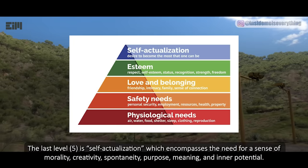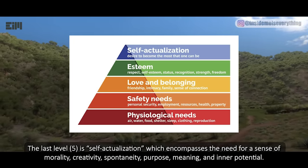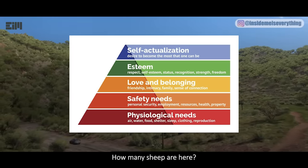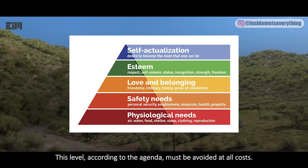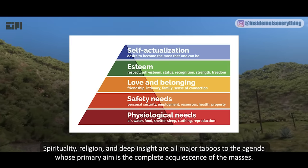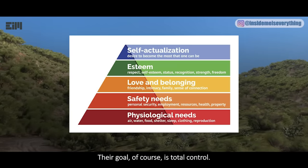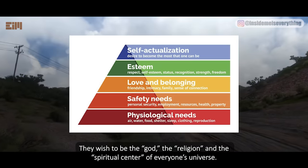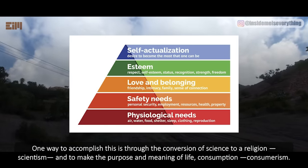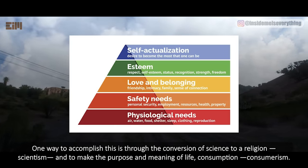The last level, 5, is self-actualization, which encompasses the need for a sense of morality, creativity, spontaneity, purpose, meaning, and inner potential. How many of us are at this elusive level? This level, according to the agenda, must be avoided at all costs. Spirituality, religion, and deep insight are all major taboos to the agenda, whose primary aim is the complete acquiescence of the masses. Their goal, of course, is total control. They wish to be the god, the religion, and the spiritual center of everyone's universe. One way to accomplish this is through the conversion of science to a religion — scientism — and to make the purpose and meaning of life consumption, consumerism.